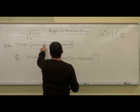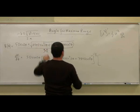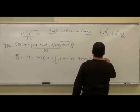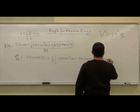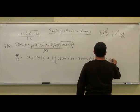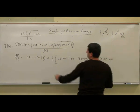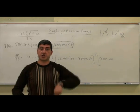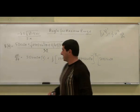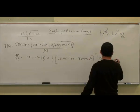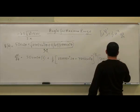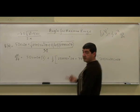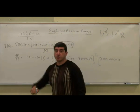So sine squared 2 theta — taking the derivative, the 2 comes down, making it 5,000 sine of 2 theta, times the derivative of sine 2 theta, which is cosine 2 theta, times the derivative of 2 theta, which is 2.